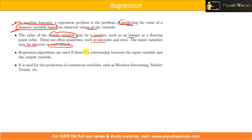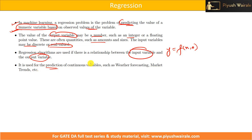Regression algorithms are used when there is a relationship between the input variable and the output variable. Here we have y = f(x, θ), where y is the output variable and x is the input variable. x is the independent variable and y is the dependent variable. It is used for prediction of continuous variables such as weather forecasting, market trends, and so on.